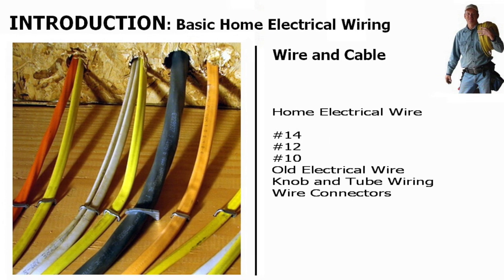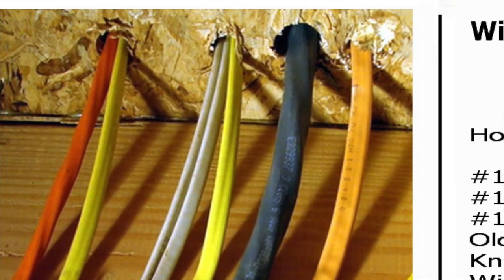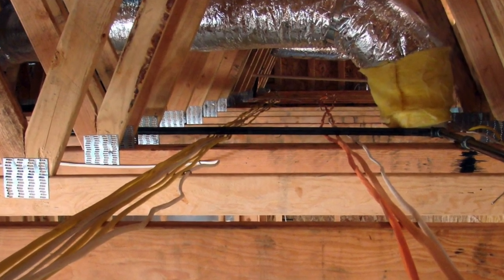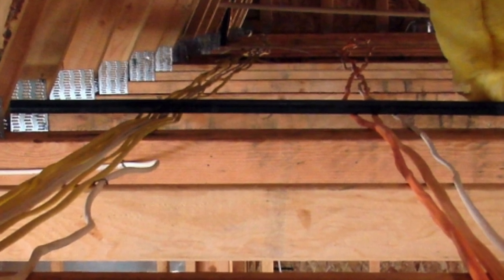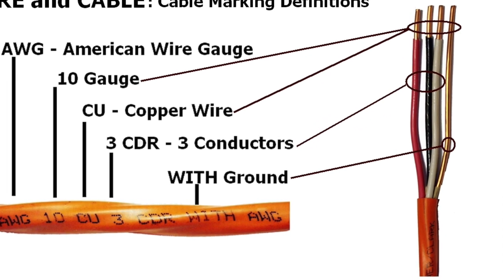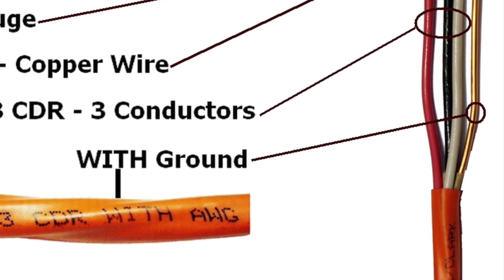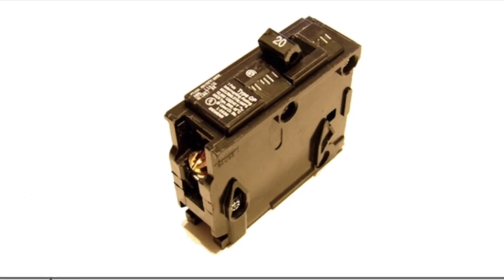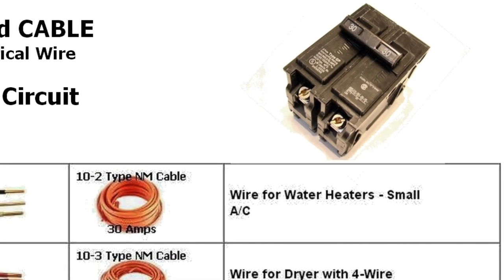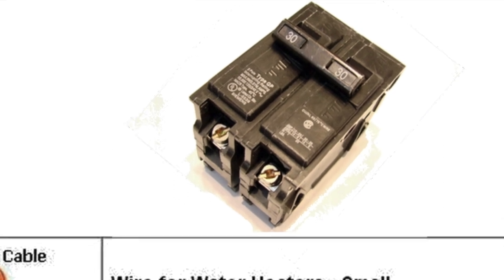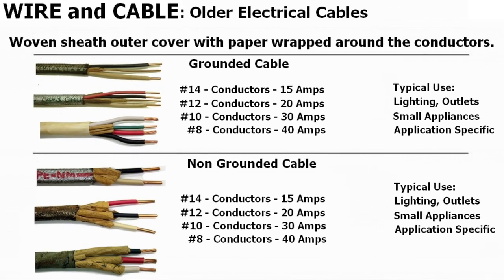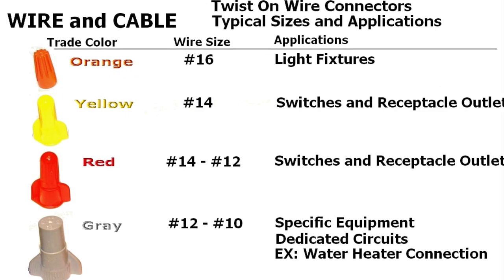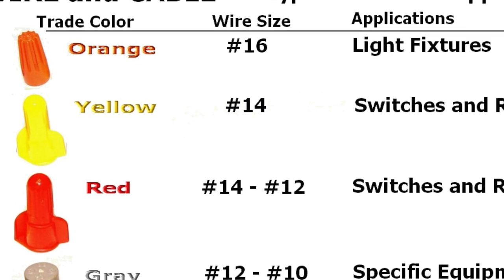Then we get into wire and cable. We cover typical cables using number 14, 12, and 10 wire systems, which are 15, 20, and 30-amp circuits throughout the home. We also look at old electrical cable in older homes, knob and tube wiring, and wire connections — how to identify wire and understand what it means, along with the different types of wire connectors used for wiring connections in the home.